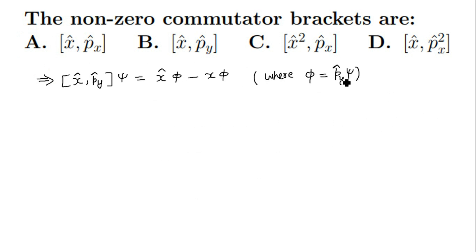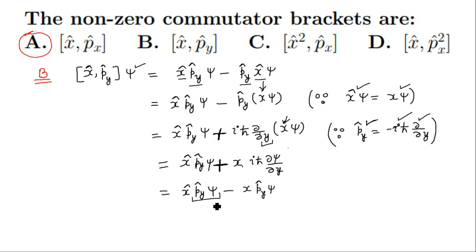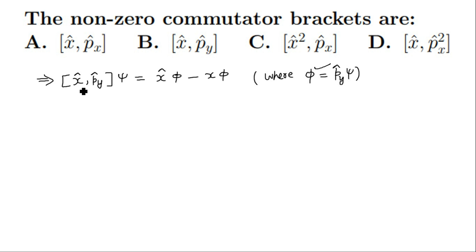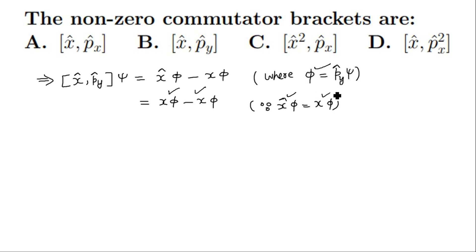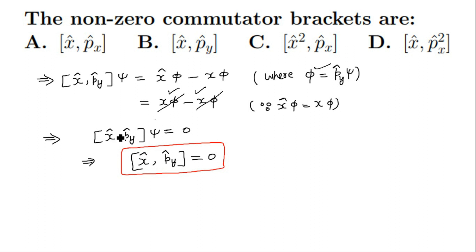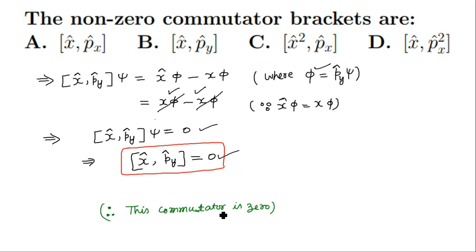We let p-y-cap psi equal some new function phi. Then the expression becomes x-cap phi minus x phi, which further simplifies to x phi minus x phi since x-cap phi equals x phi. These two terms cancel each other. As a result, the commutator [x-cap, p-y-cap] acting on psi equals zero, so [x-cap, p-y-cap] = 0. The second commutator is zero.